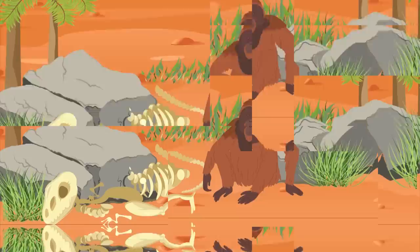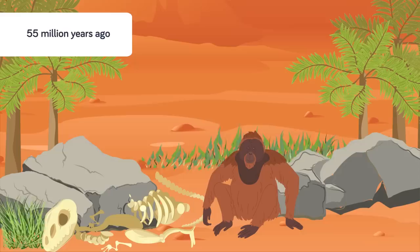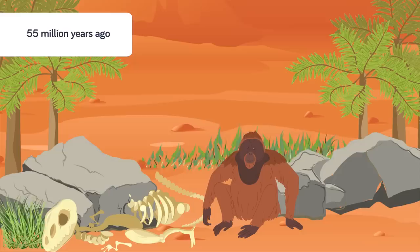The primates split into two groups, and one of those groups will become monkeys and apes, and eventually us. Then around 55 million years ago the earth heats up and we have another extinction. Lots of life dies, but lots survive too. The fossil record over the next few million years shows things that look like whales and dolphins.